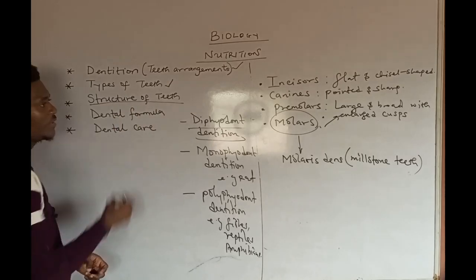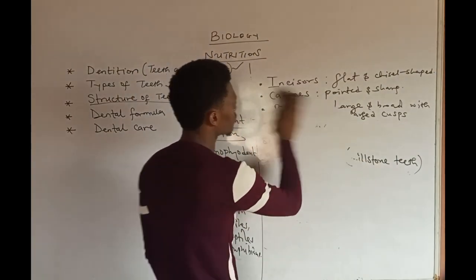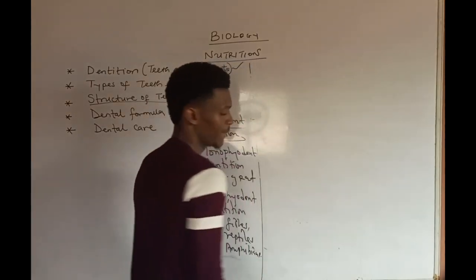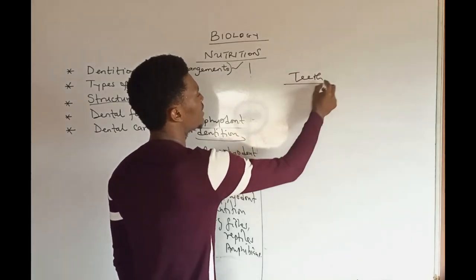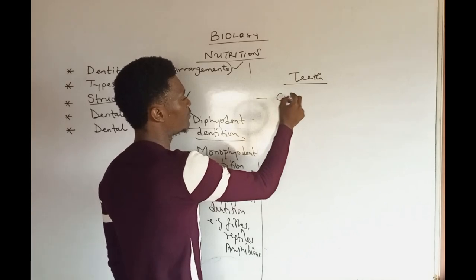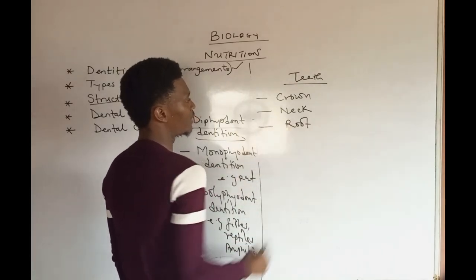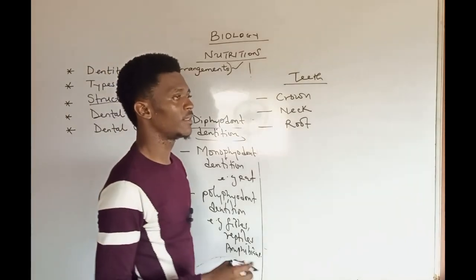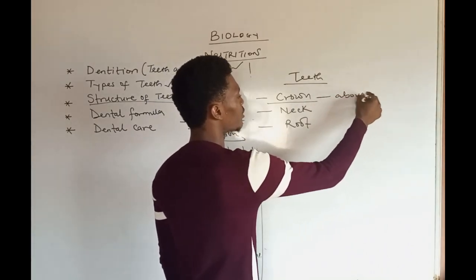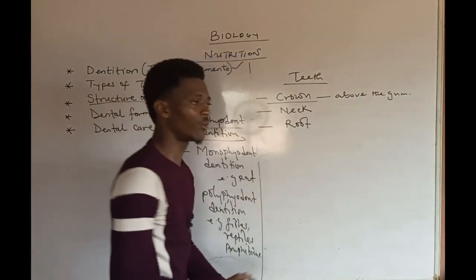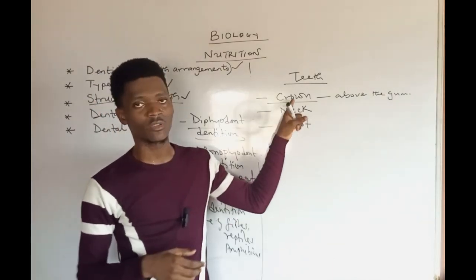Now let's consider the structure of teeth. We have three main divisions or portions of the teeth: we have the crown, then we have the neck, and then we have the root. The crown is simply the part of the teeth that is above the bone — the region visible to the eyes — and it has a crown-like shape.